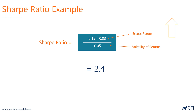Generally speaking, if you want to have a higher Sharpe Ratio, you want higher expected returns or higher excess expected returns and lower volatility. Those two forces create higher Sharpe Ratios.